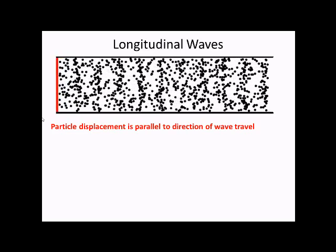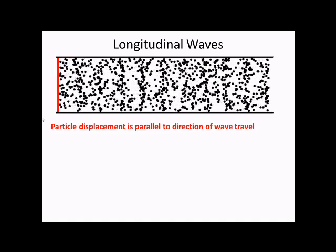Two types of waves: longitudinal and transverse. First up, longitudinal. So here, the particles vibrate or oscillate parallel to the direction that the wave is travelling in.